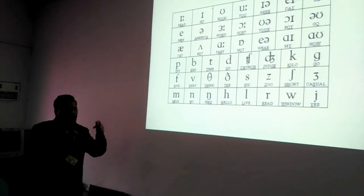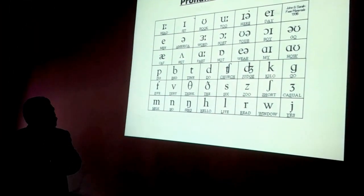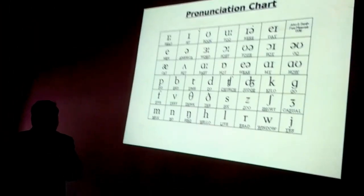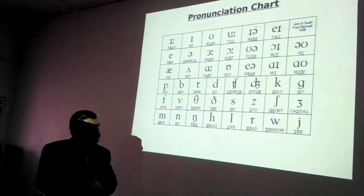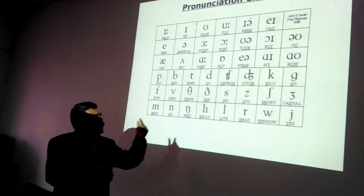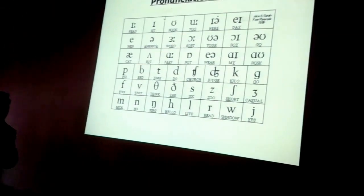Beginning with A, moving towards A, as in where. Then A and I as in I or my. Then there comes A and U as in how. So these are eight diphthongs.